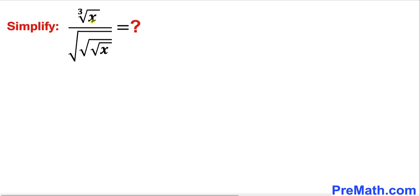At the numerator we have the cube root of x divided by the denominator which has nested radicals. Please don't forget to give a thumbs up and subscribe. Let's go ahead and get started.